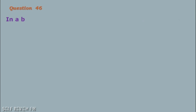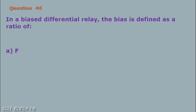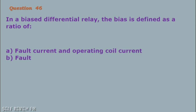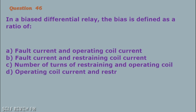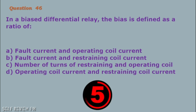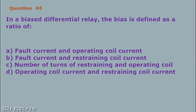Question number 46: In a bias differential relay, the bias is defined as a ratio of: A. Fault current and operating coil current B. Fault current and restraining coil current C. Number of turns of restraining and operating coil D. Operating coil current and restraining coil current. The correct answer is letter D, operating coil current and restraining coil current.